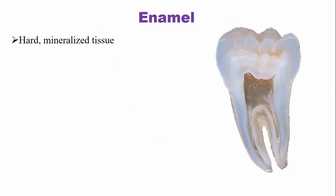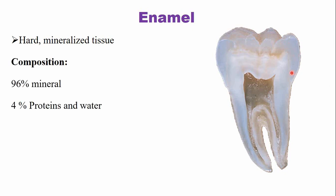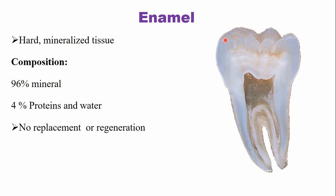Enamel is a hard mineralized tissue that covers the coronal dentine. It is the most highly mineralized tissue of the human body. Enamel comprises 96 percent mineral — basically calcium phosphate, also known as hydroxyapatite — with only three percent protein, which are amelogenin and non-amelogenin proteins, and one percent water. Enamel does not have any collagen fibers at all. The enamel-forming cells are known as ameloblasts. When the tooth emerges into the oral cavity, the ameloblasts are lost, so replacement or regeneration of enamel is not possible.